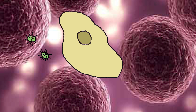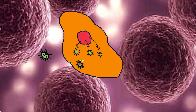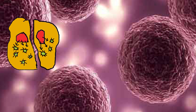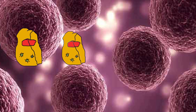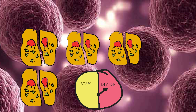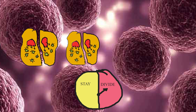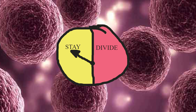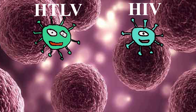When HTLV enters a human immune cell, it retroactively translates its RNA into DNA and starts producing its key proteins to create more viruses. Its key proteins also transform the cell into a cancer cell, making it divide more, thus also creating more viruses. Every cell has a biological clock that tells the cell when it's time to divide and multiply. This virus blocks the clock so the cell is constantly multiplying.